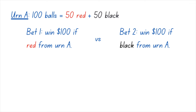First, you're asked to choose between bet 1 and bet 2. With bet 1, you draw a ball from urn A — if it's red, you win $100; if black, nothing. Bet 2 is the opposite: you win $100 if the ball is black and nothing if it's red. As the number of red balls is equal to the number of black balls, we're indifferent between the two bets.